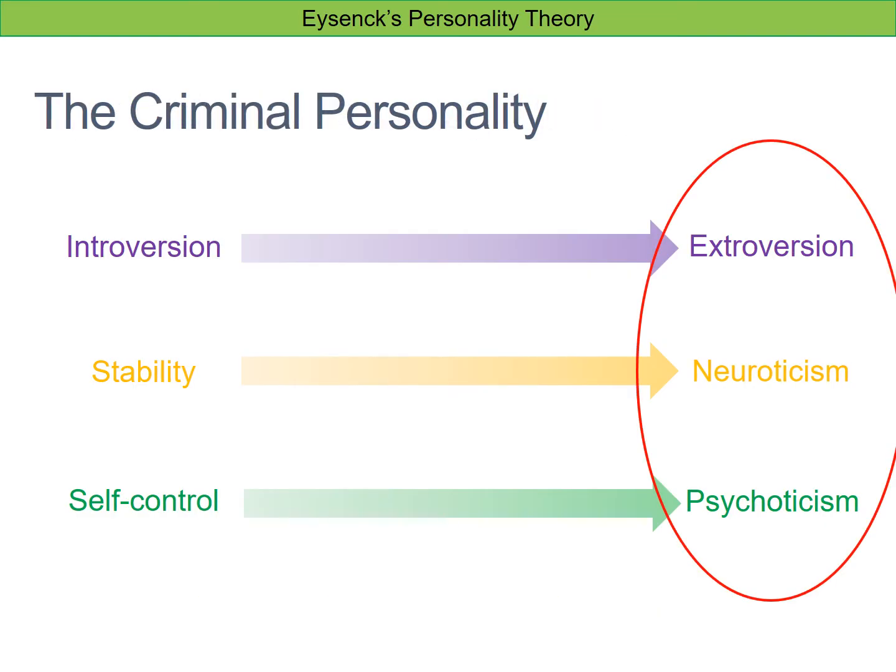The theory states that the criminal personality is one that falls at the extroversion and neuroticism end of the scale, and also that people who are criminals would tend to score more highly in psychoticism as well.